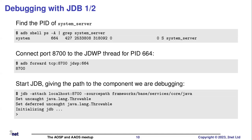Here's an example of doing basically the same thing. I want to set a breakpoint on the setBrightness function. First I need to know the PID of the process I want to attach to. Then I do an ADB forward, choosing a suitable local TCP port number — 8700 seems reasonable — and connect to the JDWP thread of process 664. Then, in JDB, I attach to this port number on localhost, and point it to the place where it will find the source code, in this case for System Server.